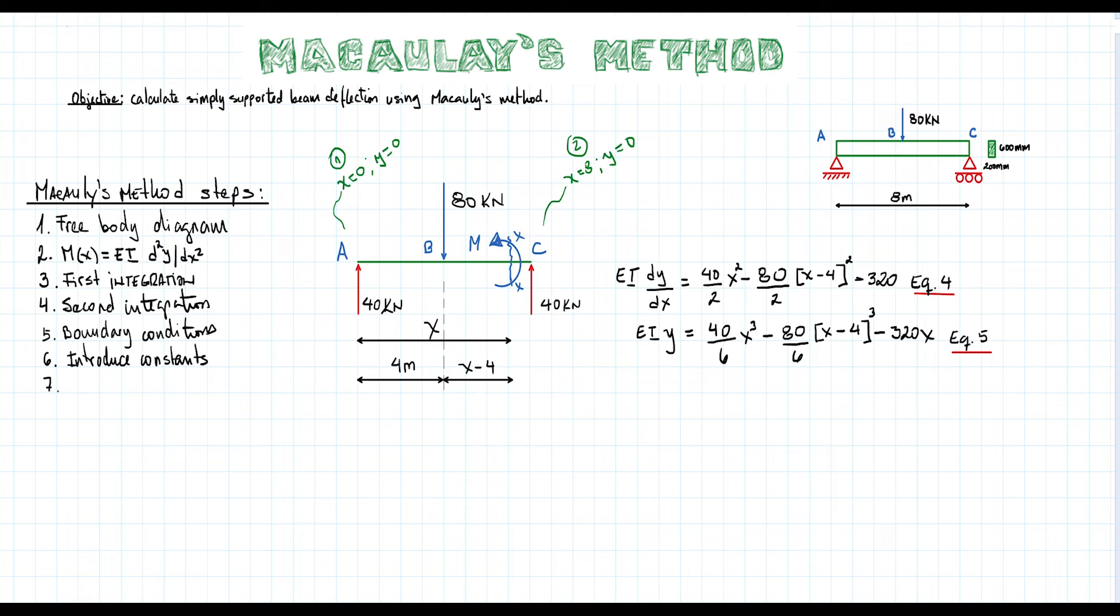Finally, in step number 7, use equations 4 and 5 to find the displacements and rotations at any position along the beam. And there you go. We apply the steps corresponding to Macaulay's method to our simply supported beam to find the rotations and displacements or deflections equations.